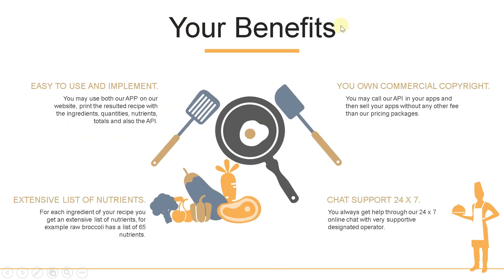Your benefits. Easy to use and implement. You may use both our app on our website and print the resulted recipe with the ingredients, quantities, nutrients, totals, and also the API. Extensive list of nutrients — for each ingredient of your recipe you get an extensive list of nutrients; for example, raw broccoli has a list of 65 nutrients. You own commercial copyright: you may call our API in your apps and then sell your apps without any other fee than our pricing packages.